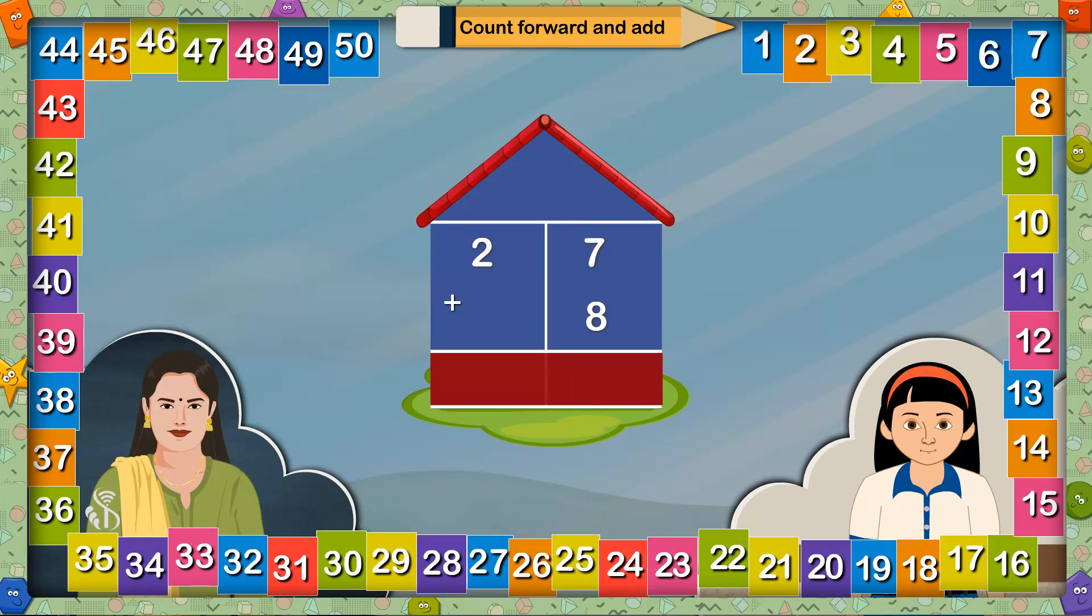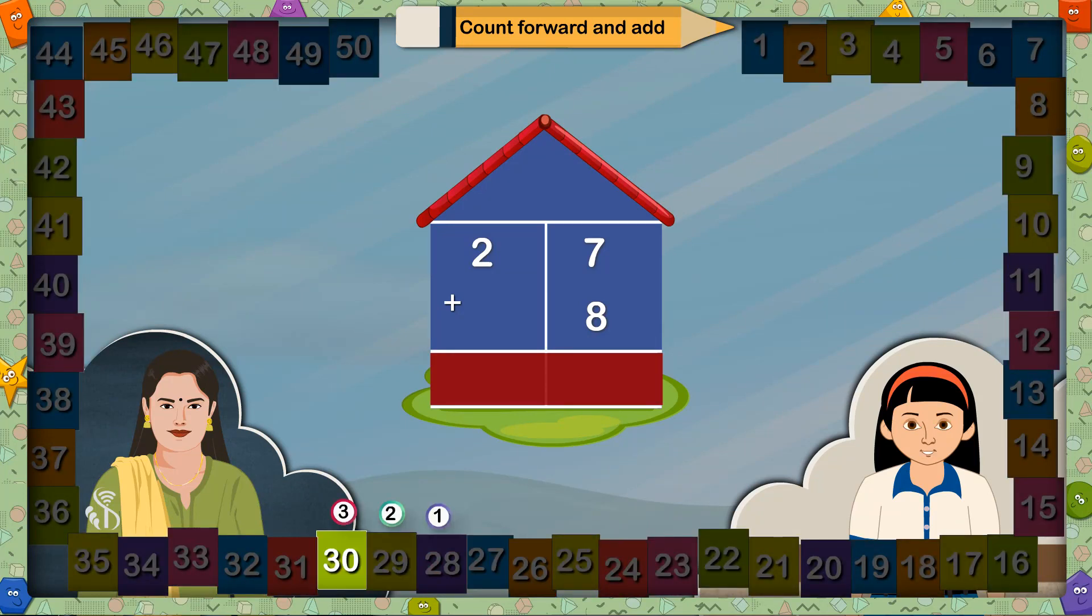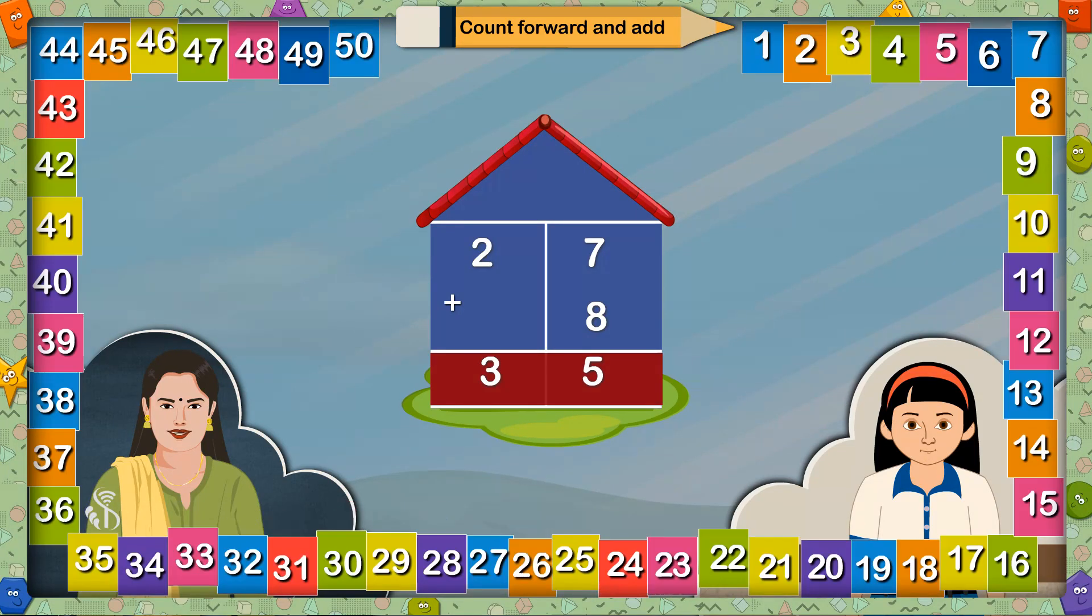27 plus 8 equals? 8 places after 27 means 35. Very good, all of you have answered very well.